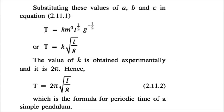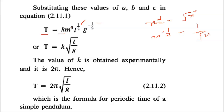Substituting back: T = K × M⁰ × L^(½) × G^(−½) = K √(L/G). The constant K is found experimentally to be 2π, giving T = 2π √(L/G), which is the formula for the periodic time of a simple pendulum, derived purely by dimensional analysis.